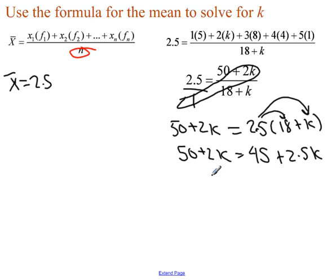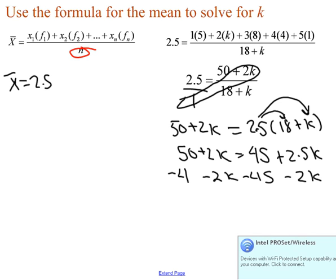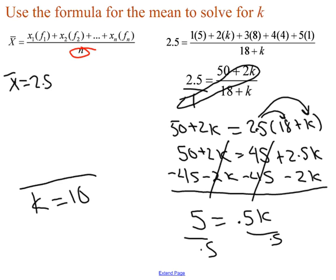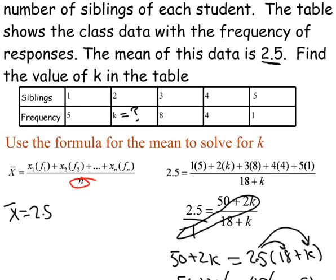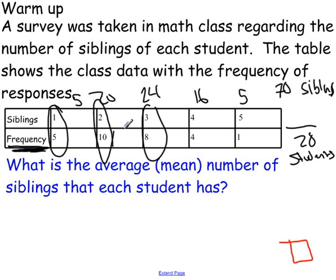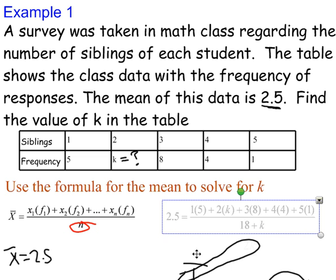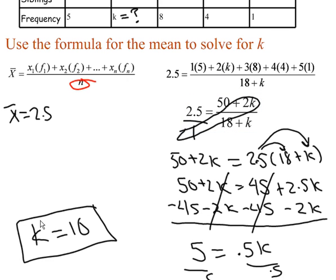So you're going to solve for k minus 2k here, minus 2k, minus 45, minus 45. So you get 5, this goes with that, this goes with that, 50 minus 45 is 5. So you get 5 equals 0.5k, divided by 0.5, k equals 10. And we knew that it was going to be k equals 10 from our previous problem, because this is the same data from our previous warm-up problem. Okay, so what we do is use the formula for the mean to solve for k, and you just want to substitute. Okay, let me bring that back up. So you should get k equals 10.